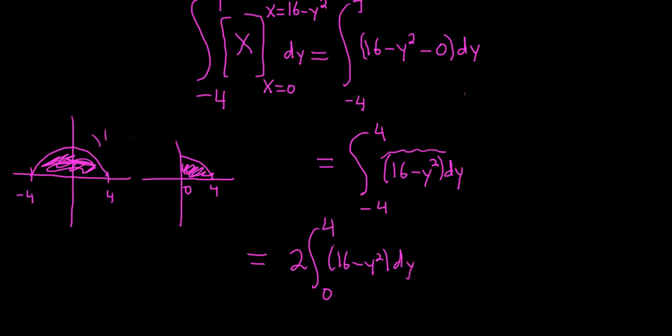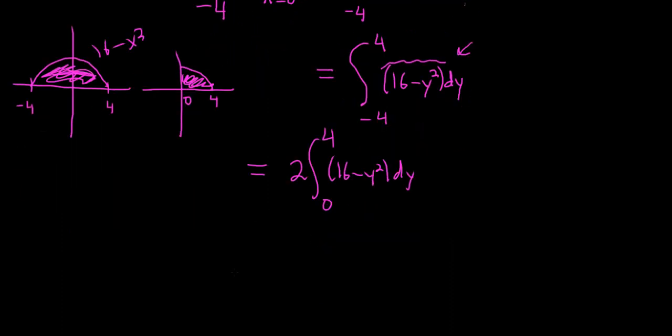I'm being a bit abusive here - this is 16 minus x squared if you were to graph it, it'd be a sideways parabola because it's dy, so let's just pretend it's x and the argument is still the same. Now we can integrate. This equals 2 times 16y minus y cubed over 3, and we're going from 0 to 4.